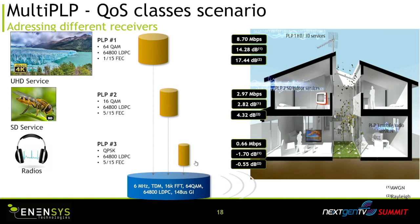As an example, you can choose one pipe with a very robust signal for indoor reception or audio channels, another pipe with middle robustness for SD or HD channels with indoor antenna, and a higher PLP with large bandwidth but requiring an outdoor antenna. You can split your frequency into different pipes and dedicate content to the receiver type you want to address.